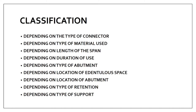This FPD is classified depending upon various types: first, depending on the type of connector; then depending on the type of material used to fabricate it; then depending on the length of the span — whether it is short span or long span; then depending on the duration of use; then depending on the type of abutment, location of the denture space, location of the abutment, type of retention, and type of support.